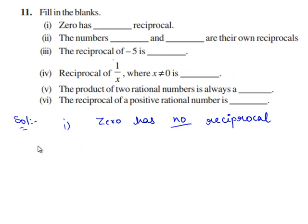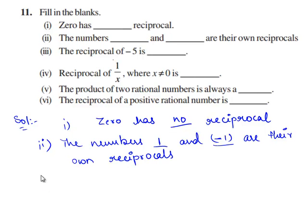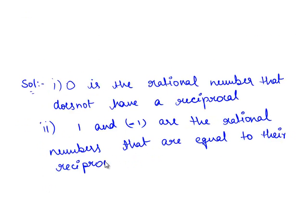The numbers 1 and -1 are their own reciprocals. Because 1 times 1 gives 1 and -1 times -1 again gives 1.